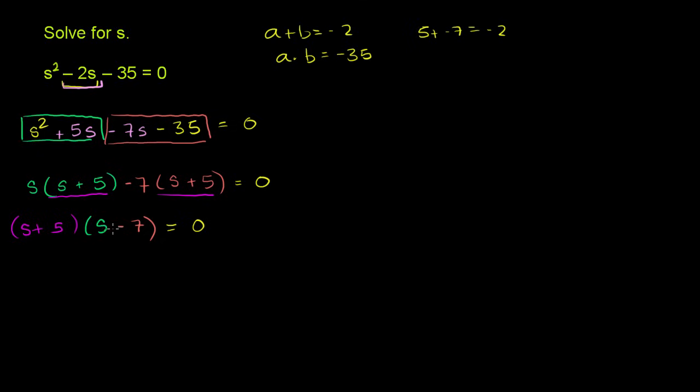Now that we've factored it, we just have to think a little bit about what happens when you take the product of two numbers. s plus 5 is a number. s minus 7 is another number. And we're saying that the product of those two numbers is equal to 0. If I told you that I had two numbers, if I told you that I had the numbers a times b and that they equal to 0,